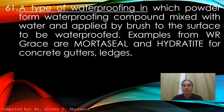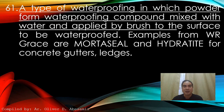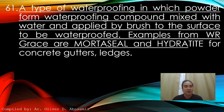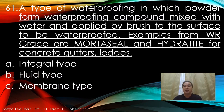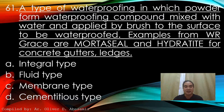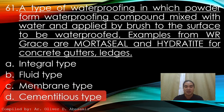A type of waterproofing in which powder from a waterproofing compound is mixed with water and applied by brush to the surface to be waterproofed. Examples include W. Grace, Mortacyl, and Hydratite for concrete gutters and ledgers. A. Integral type. B. Fluid type. C. Membrane type. D. Cementitious type. Answer: D. Cementitious type.